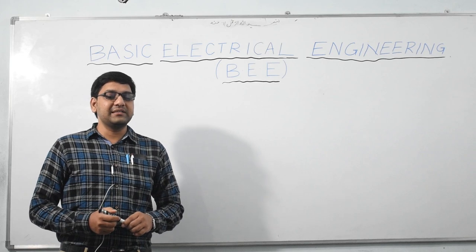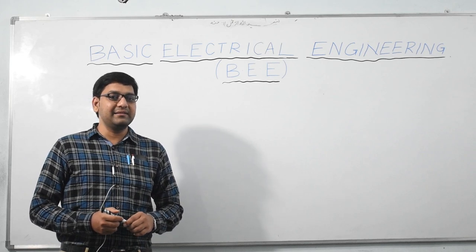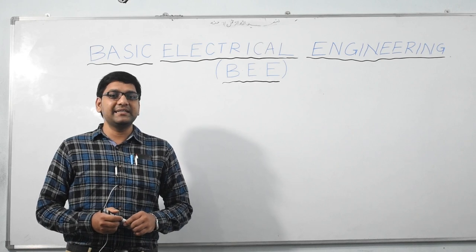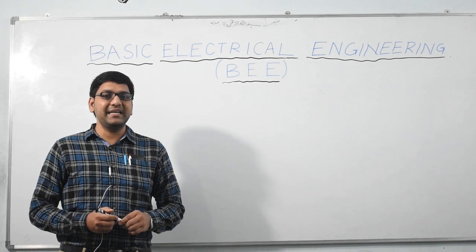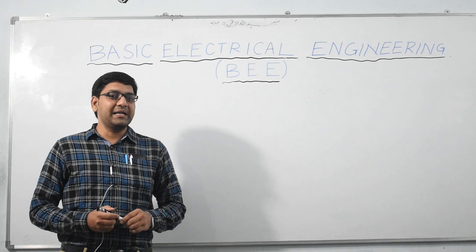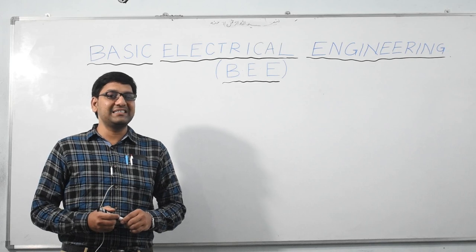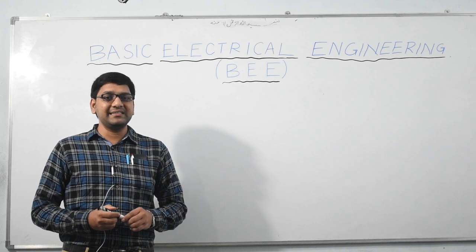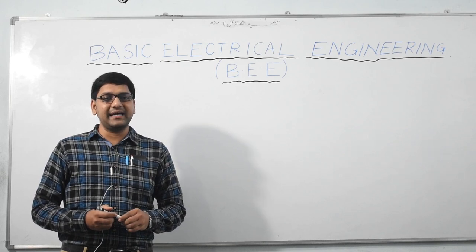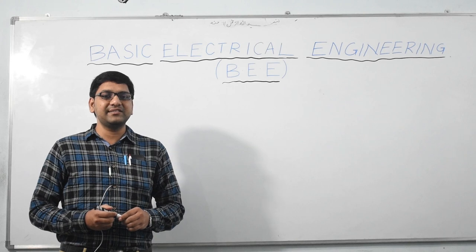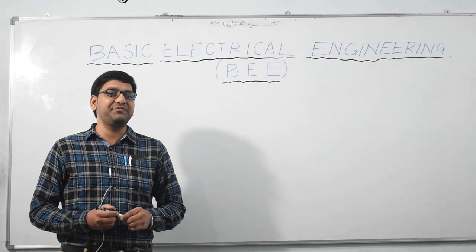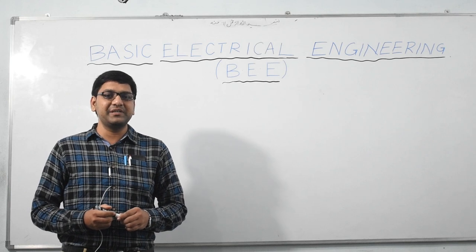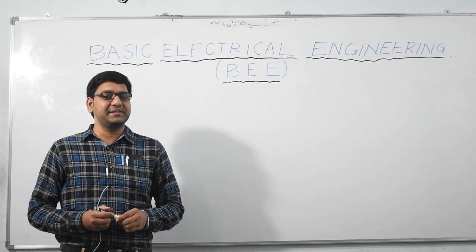One of the basic terms before I discuss anything dealing with BEE is electrical power. Electrical power is of two types: AC and DC. BEE is a study of AC and DC machines as well as circuits. It also has a last unit which is a study of safety measures and safety equipment, such as fuses and MCBs.